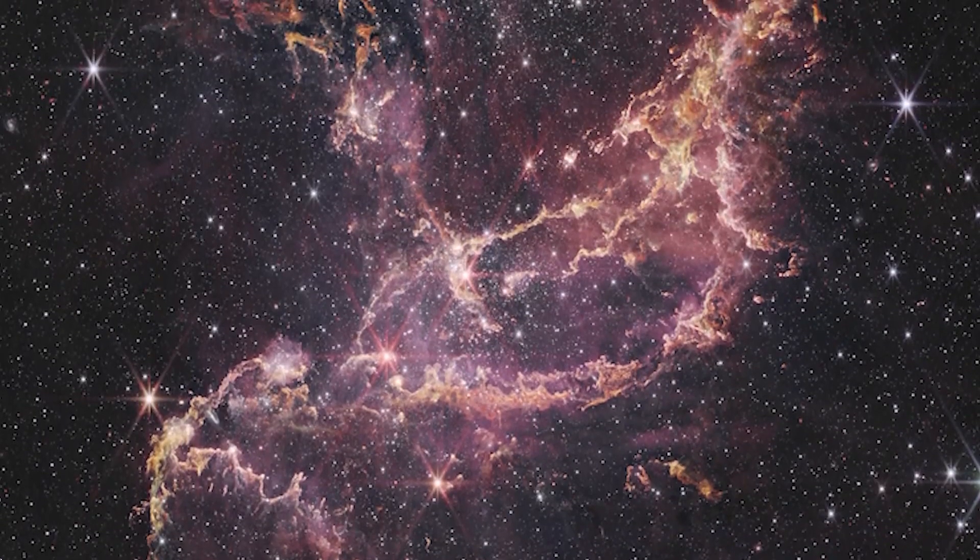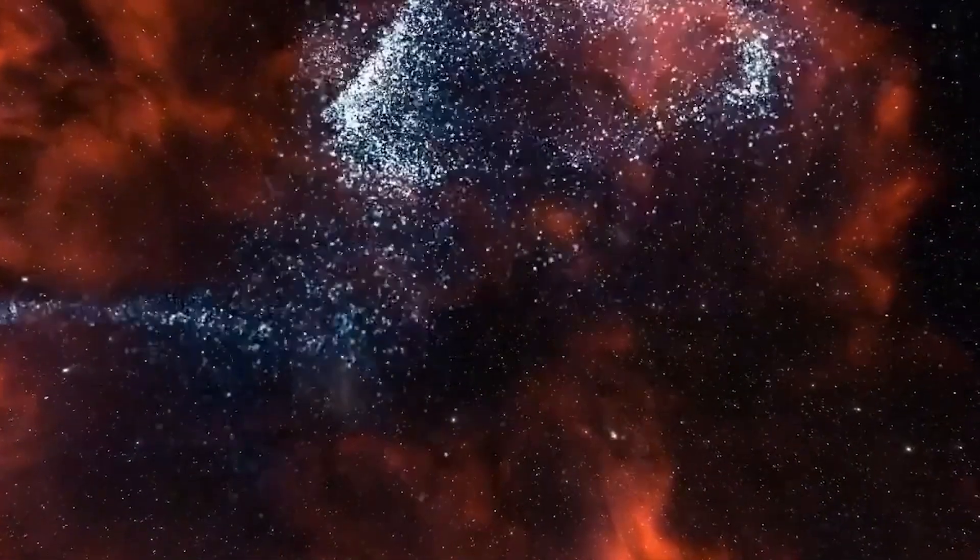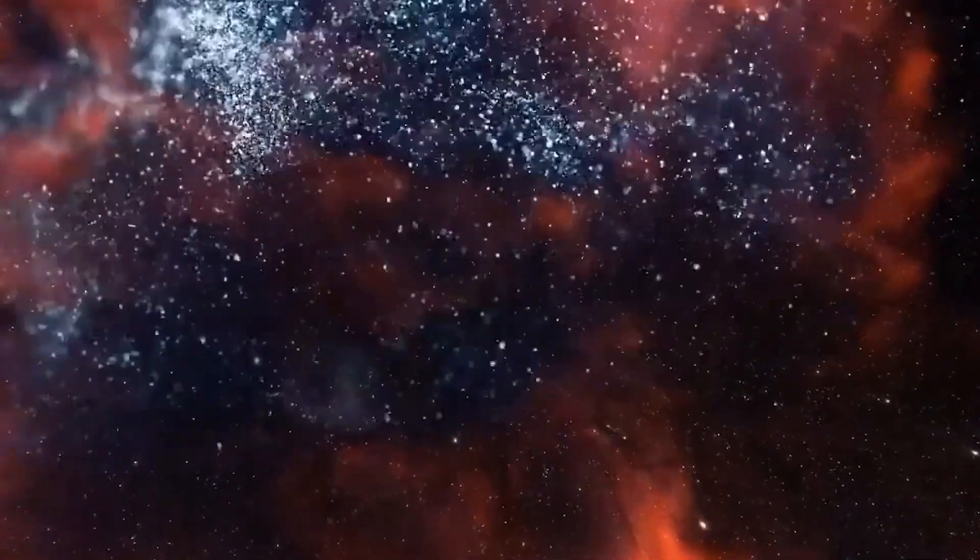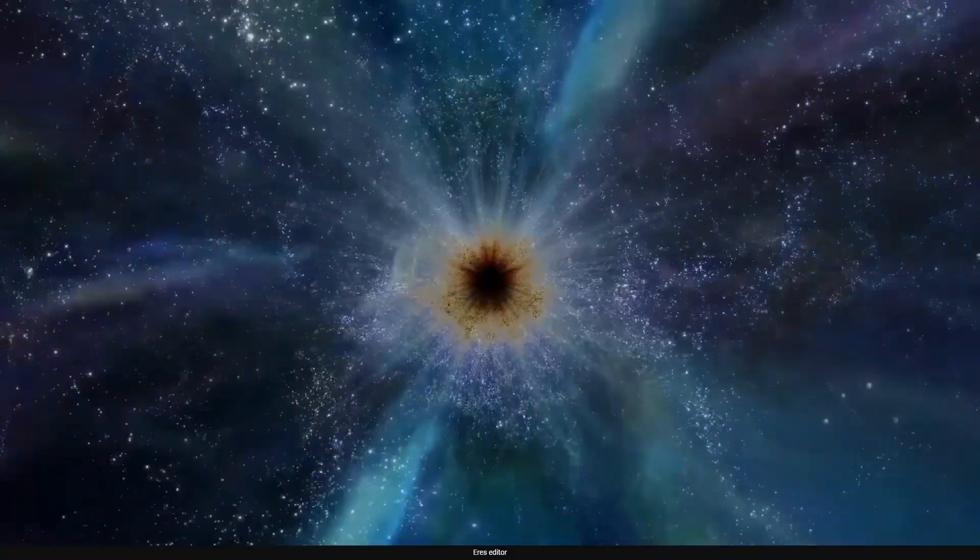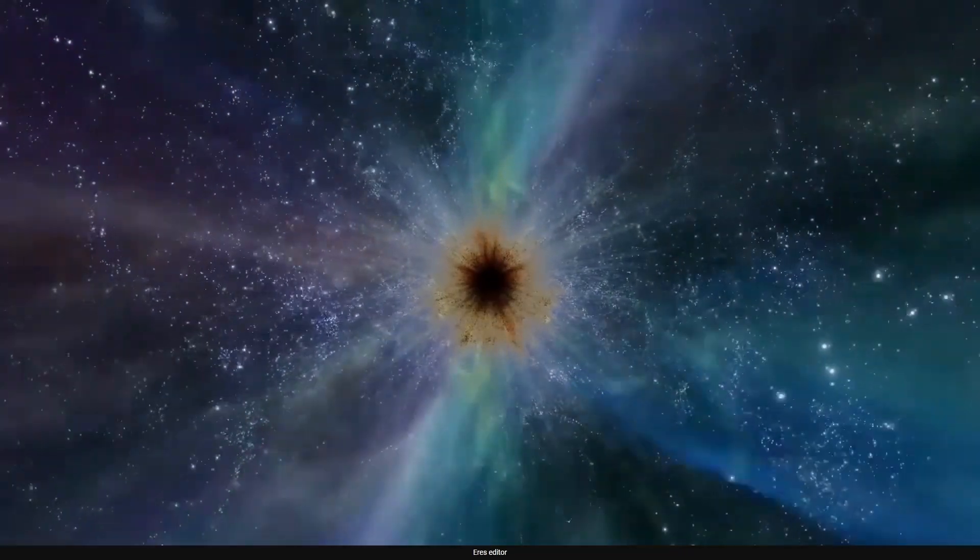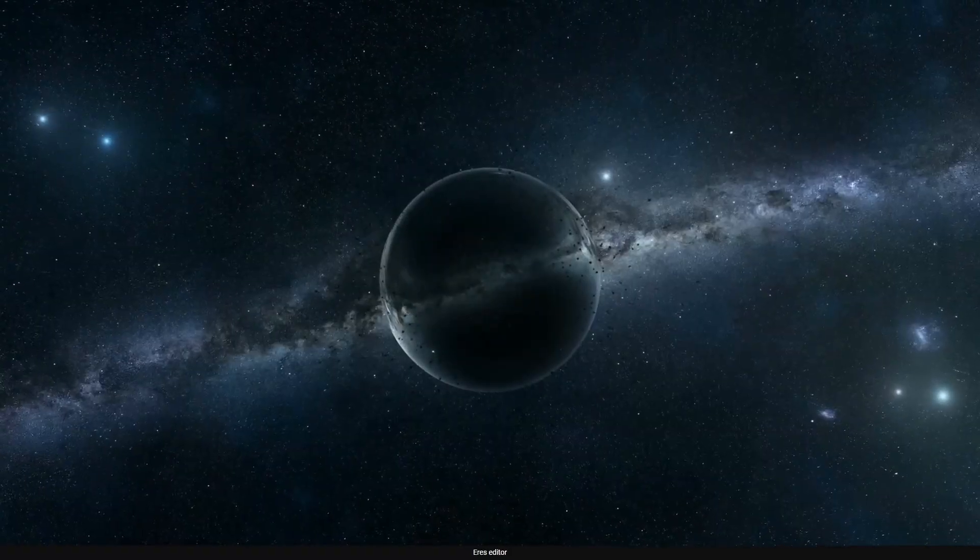matter clumped together under the influence of gravity, forming stars, galaxies, and eventually planets, like Earth. Over time, these structures became larger and more complex, giving rise to the diversity of objects and phenomena that we observe in the universe today.